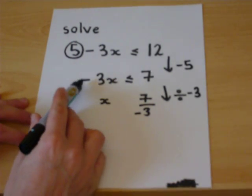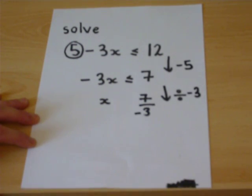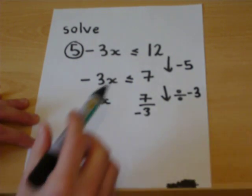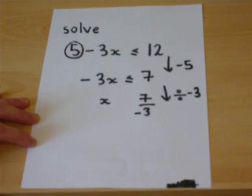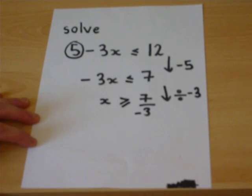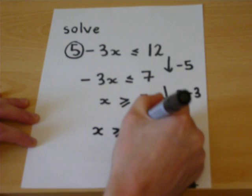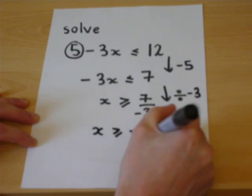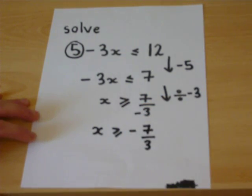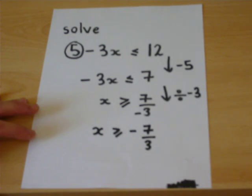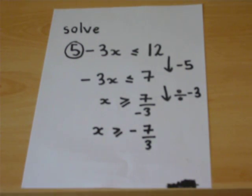When we divide by a negative, or multiply by a negative, we are reversing the direction of the inequality. So this less than or equal to becomes greater than or equal to. We have not quite finished — this looks a bit clumsy. We would tend to write it as x greater than or equal to minus 7 over 3. That would be the inequality solved.